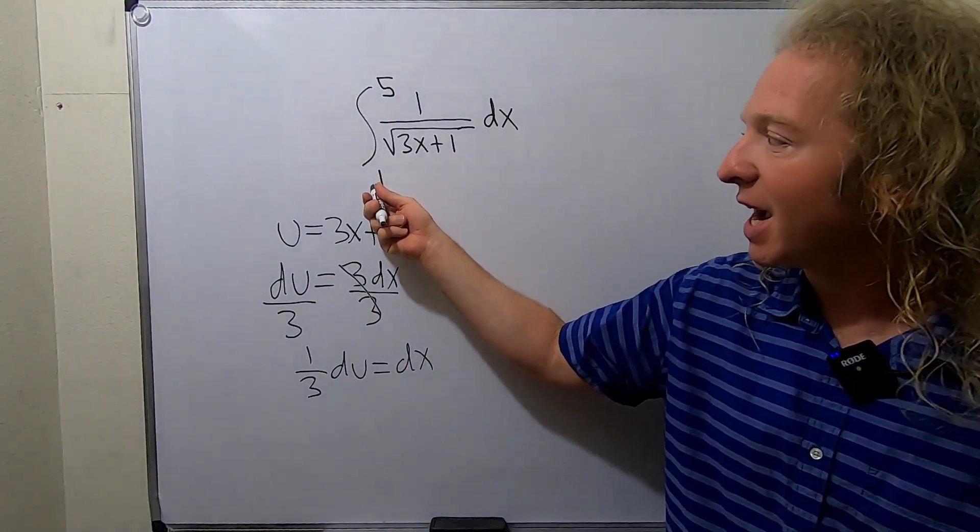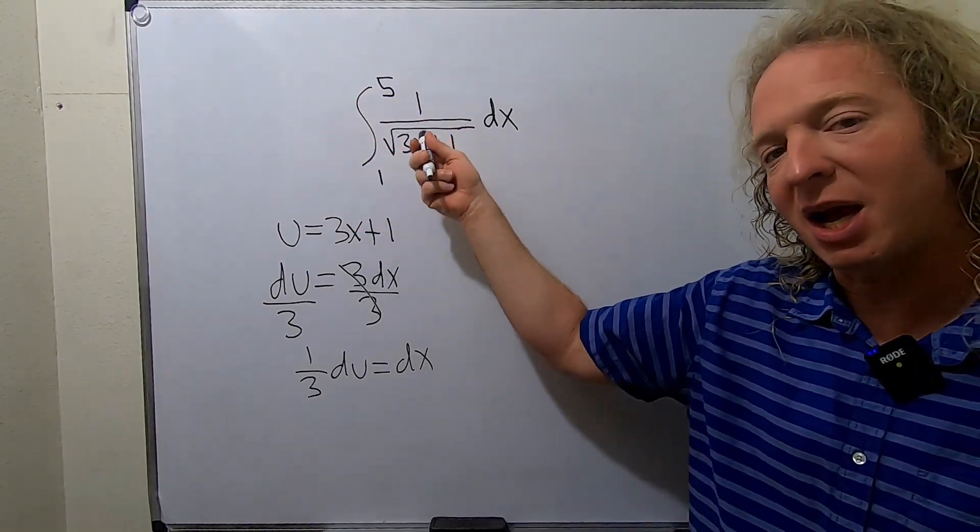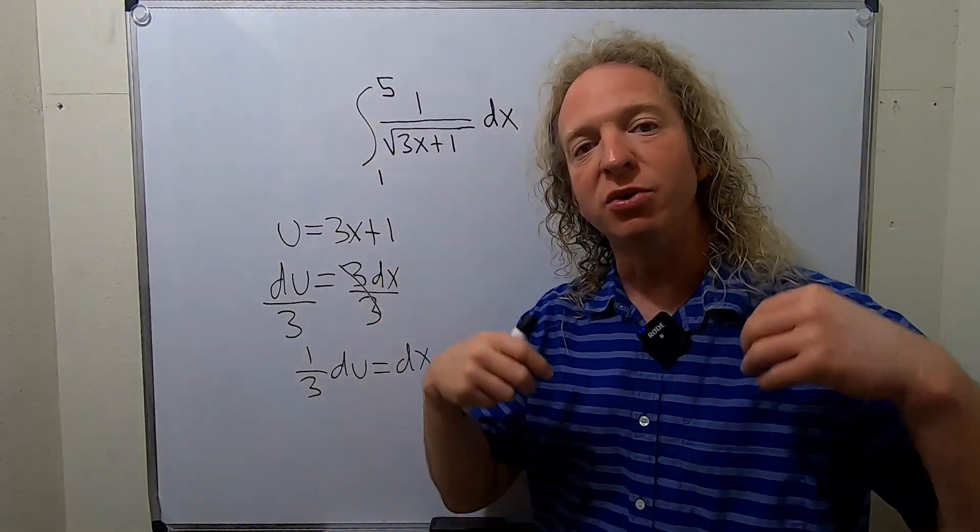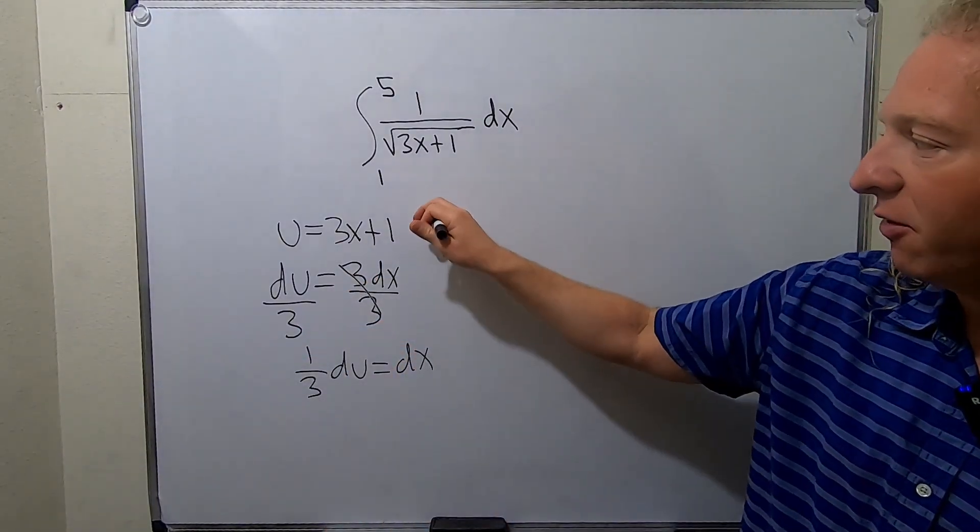These are x values, right, because we're integrating with respect to x. We are converting to u, so we have to turn them into u values. So let's carefully do that.